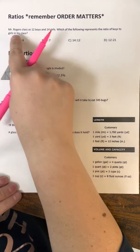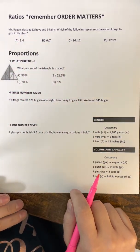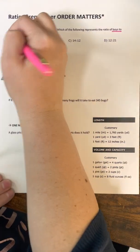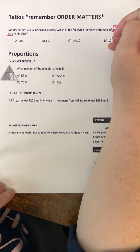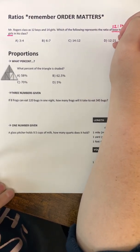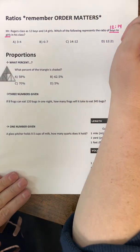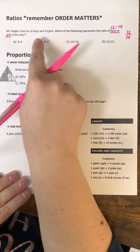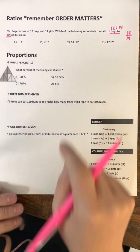All right, so our first question example says, Mr. Rogers' class has 12 boys and 14 girls. Which of the following represents the ratio of boys to girls? So the first thing I'm going to write down is the ratio. Boys, there were 12, to girls, there were 14. And that is our ratio. Remember, we can also write it like this, cowboy and horse. But in this case, our answers are all in this form right here. So 12 to 14.